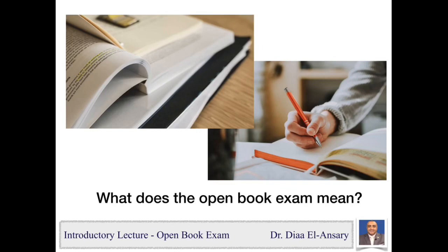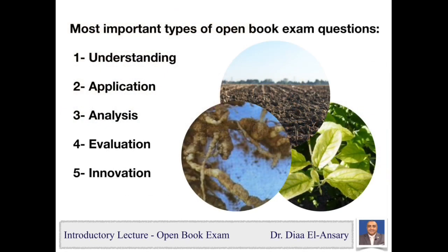I will now discuss the most important types of open book questions and examples. The first type is understanding questions, used to measure your understanding by building a specific meaning from the information provided. For example, we may ask you to explain how something happened, give an example, or describe your understanding of a concept.